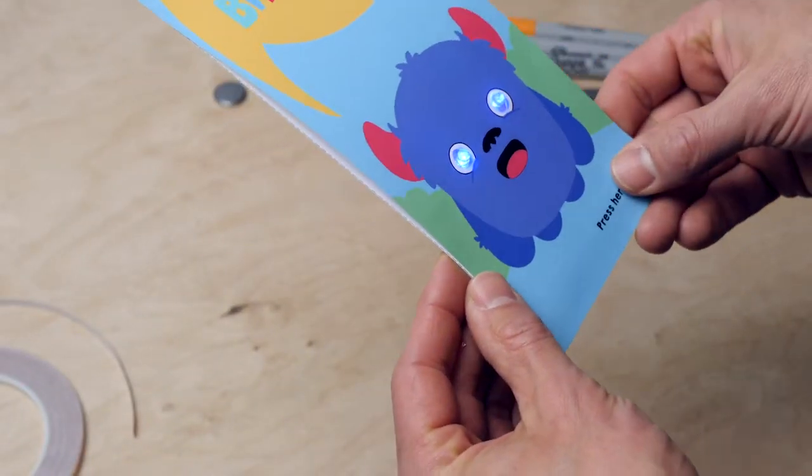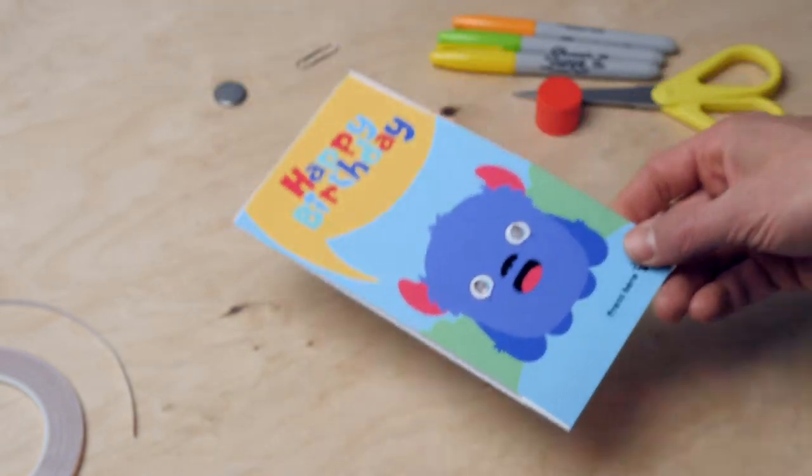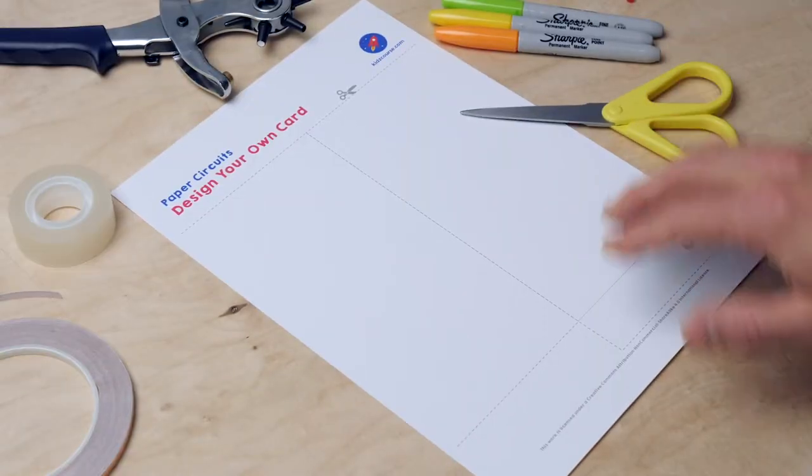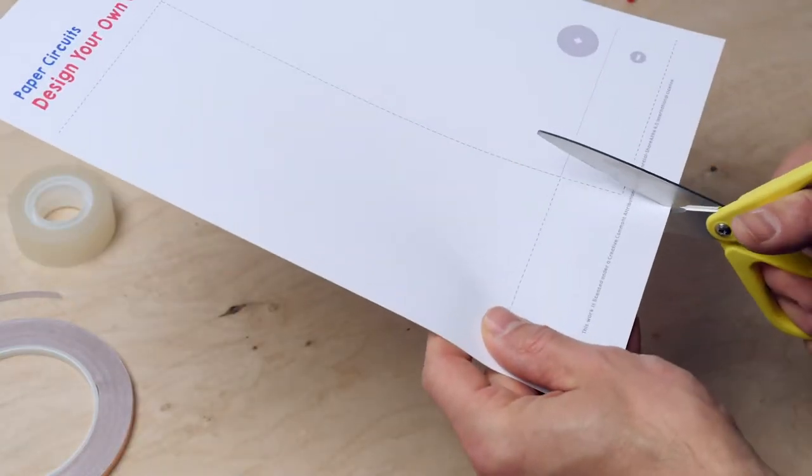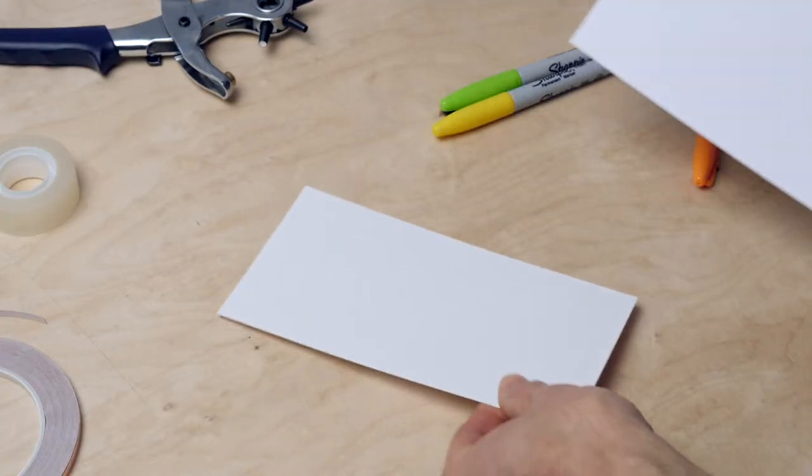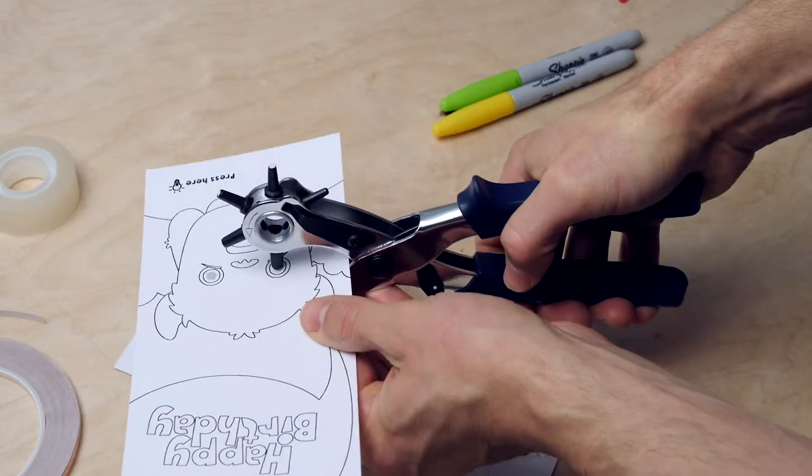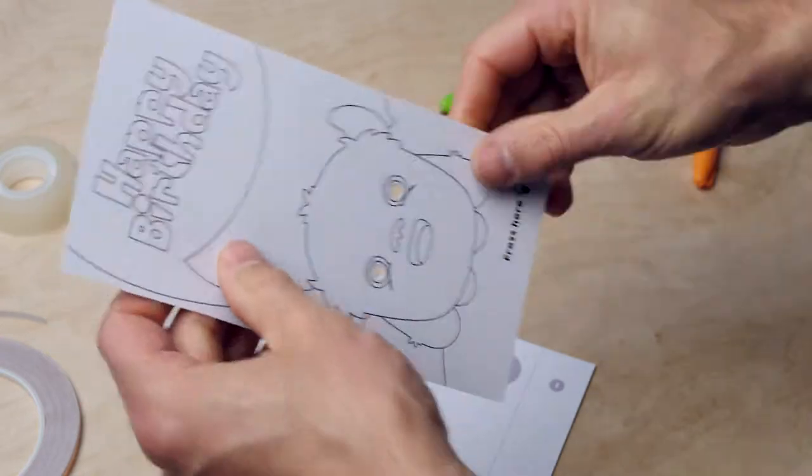In this mission you're going to make a luminous greeting card. I've made this one. Take the empty worksheet, cut out both sides. First thing you do is design your own luminous greeting card. Punch two holes. Then color the card.